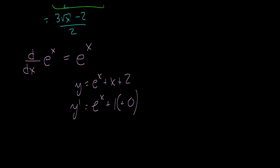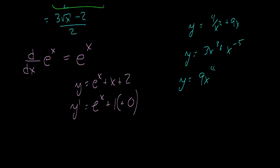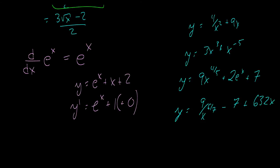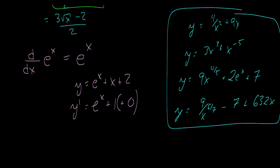I'd recommend doing a few practice problems. Find the derivatives of the following functions: 4 over x squared plus 9x; 3x cubed plus x to the negative 5; 9x to the 4/5 plus 2e to the x plus 7; and 9 over x to the 6/7 minus 7 plus 632x. I'm not going to do any of these for you — just punch them into Wolfram Alpha. You can also make up your own. It's all about practice and getting familiar with these concepts.